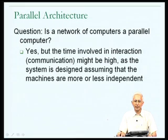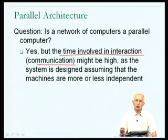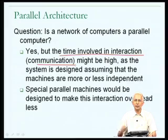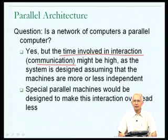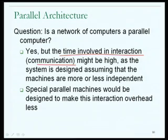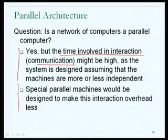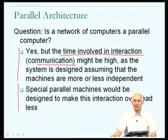The problem with a network of computers is that technically we could call it a parallel architecture, but the time involved in interaction or communication is likely to be more than it needs to be, because individual computers were designed to be independent of each other. In truly parallel computers designed specifically for running programs with more than one process on separate processors, the machine itself would be designed to make the inter-process communication overheads as low as possible. So while one could write parallel programs to run on a network of computers, special purpose parallel machines run parallel programs much more effectively.